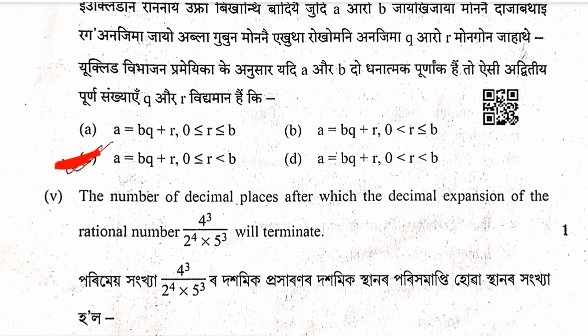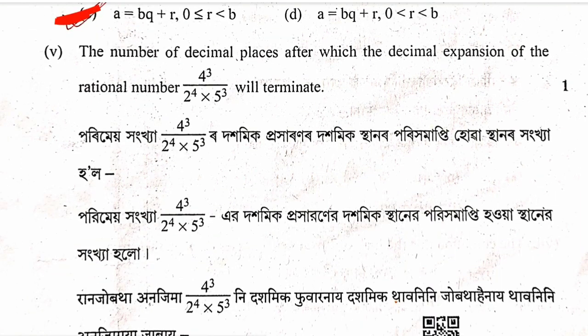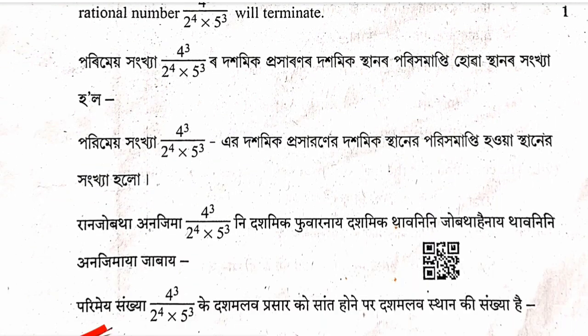Fifth question: The number of decimal places after which the decimal expansion of the rational number 4 cubed divided by 224 into 5 cubed will terminate.